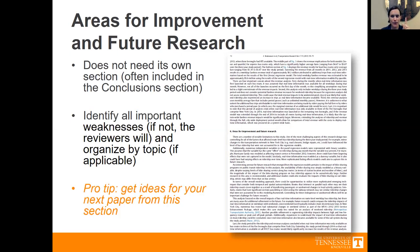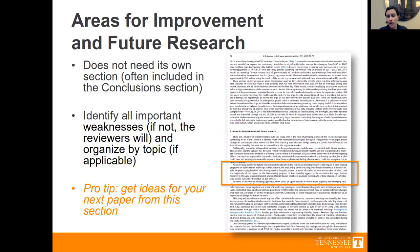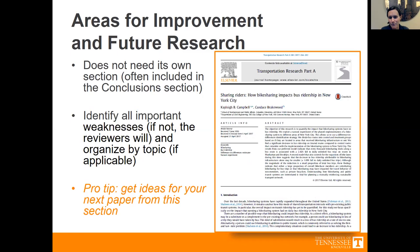My pro tip: if you're looking for a good TRB paper idea, go to the future research section of good papers you've read. Right here, this paragraph says: 'An interesting avenue for future research that emerged from the regression models pertains to the impact of bike sharing programs on public transit ridership.' We couldn't figure out that impact in our paper, but two years later I worked on that exact same topic. So I use the future research section to think about follow-on papers.